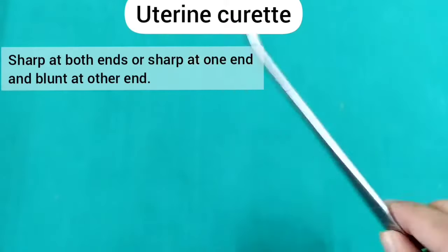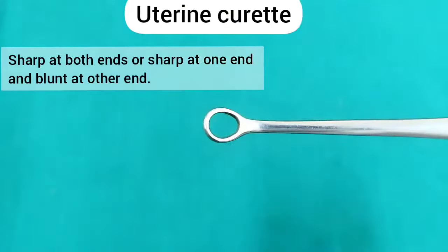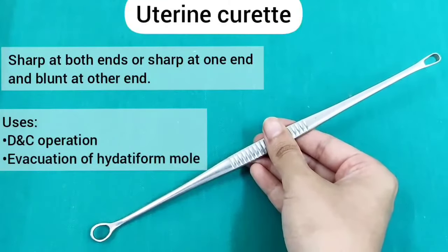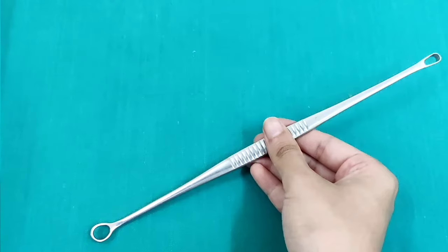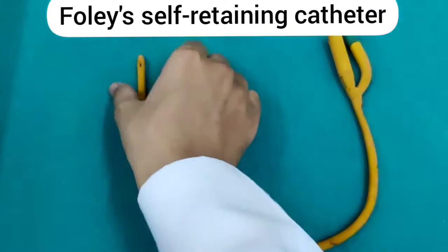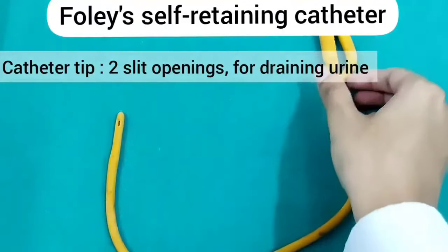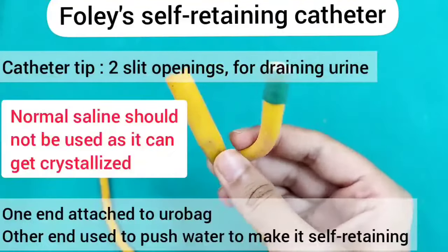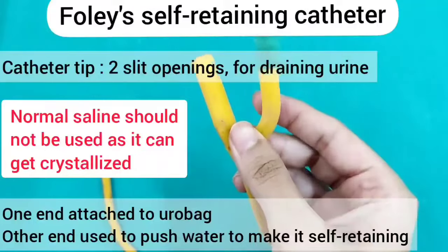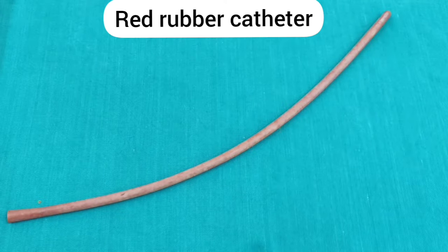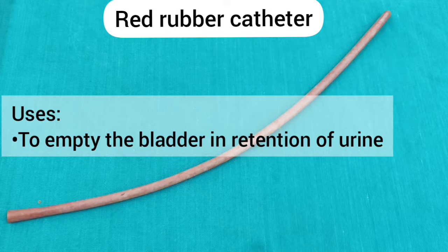Uterine curette — you can see it has a sharp end and a blunt end. The blunt end is used for curettage. It is used in D&C operation and evacuation of hydatidiform mole. Foley self-retaining catheter — the catheter tip has two openings for draining urine, and at the other end there is one port for distal water insufflation and another to be connected to the urobag. Red rubber catheter is used to empty the bladder in retention of urine.